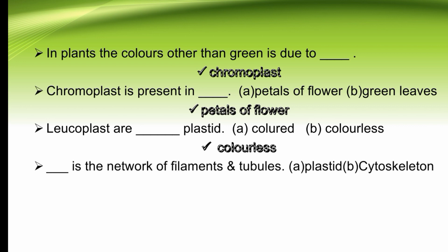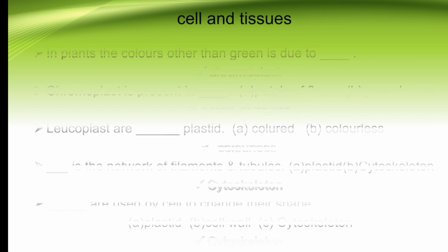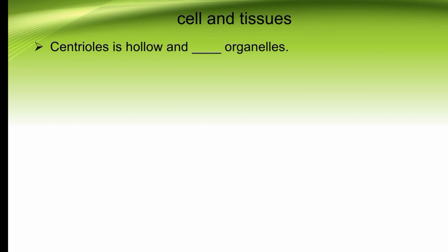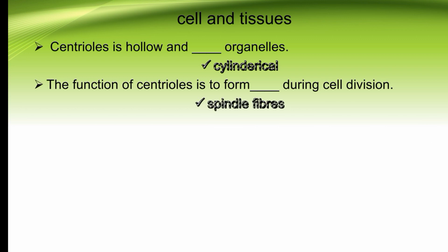Dash is the network of filaments and tubules — plastids or cytoskeleton. The right option is B, cytoskeleton. Cytoskeleton is the network of filaments and tubules. Cytoskeleton is used by cells to change their shape. Centrioles are hollow cylindrical organelles. The function of centrioles is to form dash during cell division — spindle fibers. Centrioles form spindle fibers during cell division.